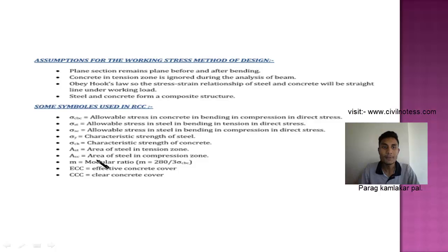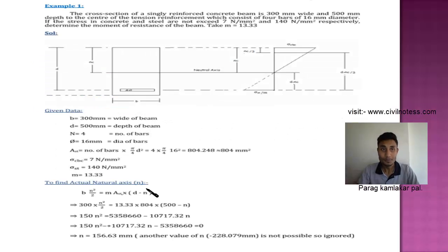AST is steel in tension, ASC is compression steel. Then M is the modular ratio which is given by 280 upon 3 Sigma CBC. ECC is effective clear concrete cover and CCC is clear concrete cover. You have to remember this notation.